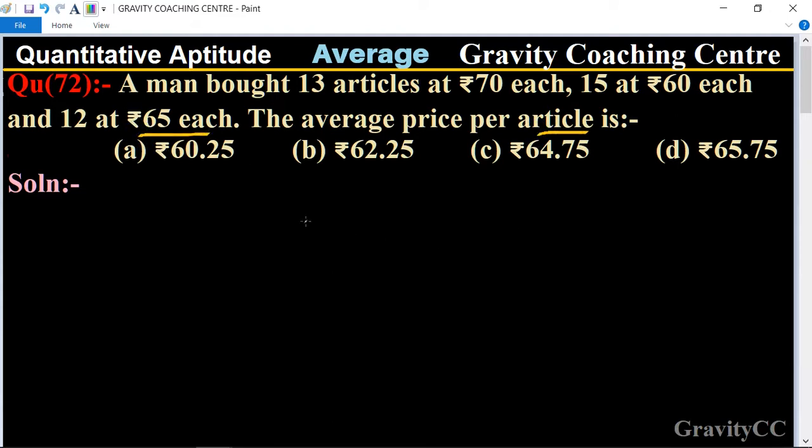of an article is what? In this question, a man bought 13 articles at the rate of ₹70, another 15 articles at ₹60, and another 12 articles at ₹65. Find the average price per article. Therefore, the required average price equals